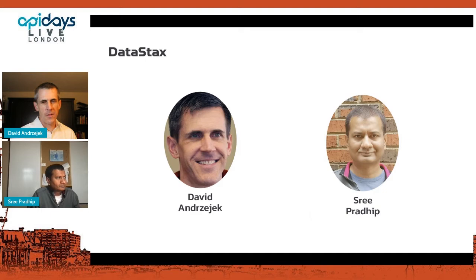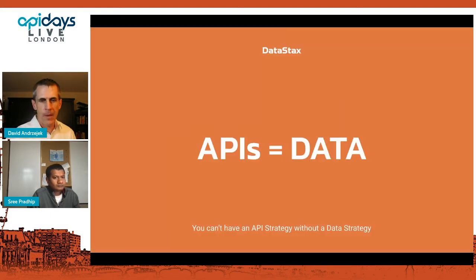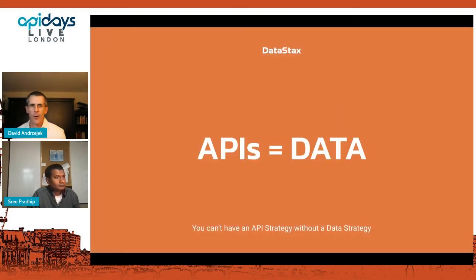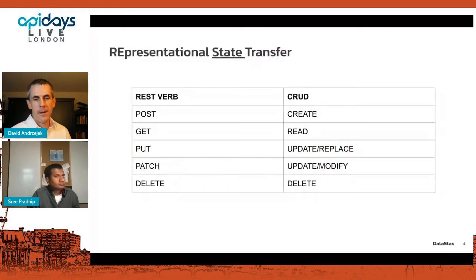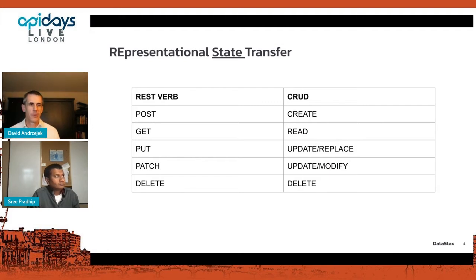I have three quick points, then I'll turn it over to Sri. First, as somebody who's spent over a decade in APIs, I'm here to tell you that your API strategy is also your data strategy. You can't think about an effective API strategy without also thinking about data. This should be obvious, but we'll do a bit of APIs 101 just to be sure.